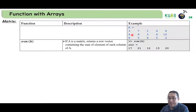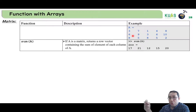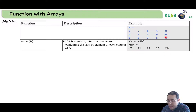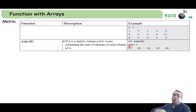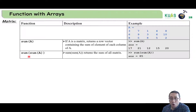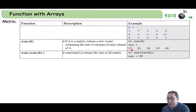For example, 3 plus 6 plus 9 will be 17, and 7 plus 9 plus 5 means 21. So the summation of a matrix gives a vector with the summation of each column. But if we need the summation of the whole matrix as one number, we should use sum(sum(A)). So if we estimate 17 plus 21 plus 12 plus 15 plus 20, the output will be 85.